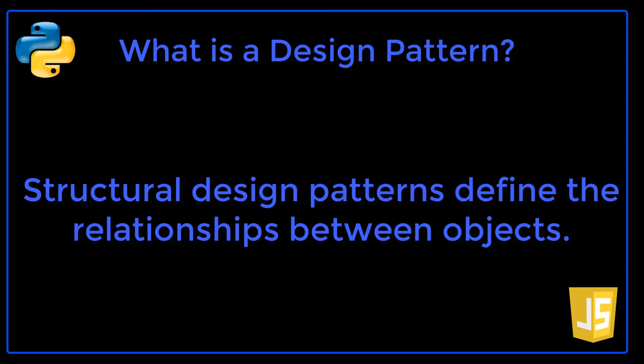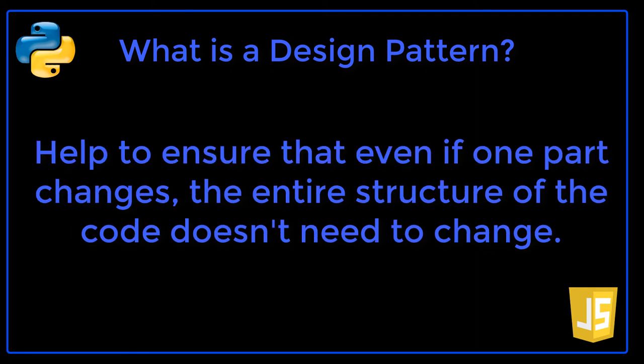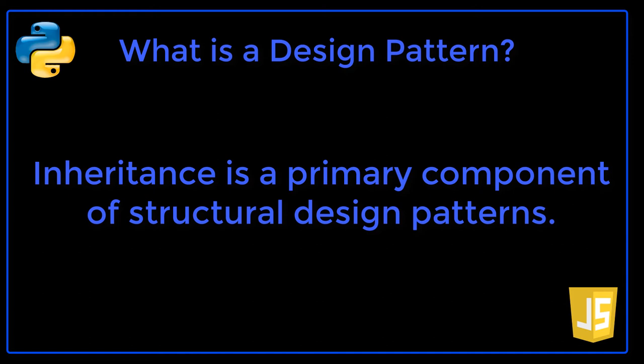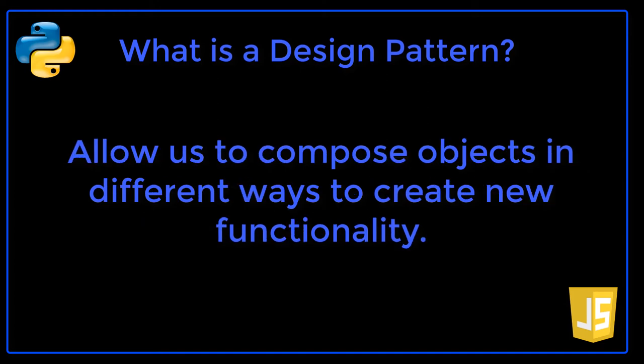Structural design patterns define the relationships between objects. They help ensure that even if one part changes, the entire structure of the code doesn't need to change. The patterns focus on inheritance as a primary component, specifically how classes inherit from one another and how they are composed from other classes.